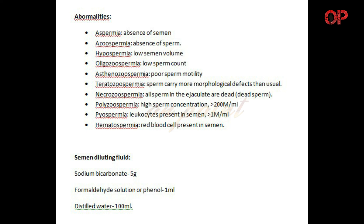Polyzoospermia: a condition in which sperm concentration is high, that is more than 200 million per ml. Pyospermia: a condition in which leukocytes are present in semen, that is more than 1 million per ml. Hematospermia: a condition in which red blood cells are present in semen.